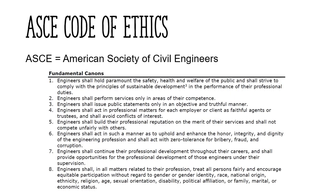Like the National Society of Professional Engineers, engineering organizations have developed their own codes of ethics. Here we have the ASCE code for example. The ASCE code of ethics shares its first six fundamental canons with the NSPE code, but has added two new canons as well. The seventh canon encourages engineers to keep improving their skills and to gain knowledge throughout their careers. The eighth canon encourages engineers to treat every person they encounter with decency and respect.